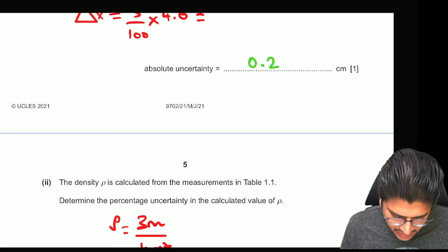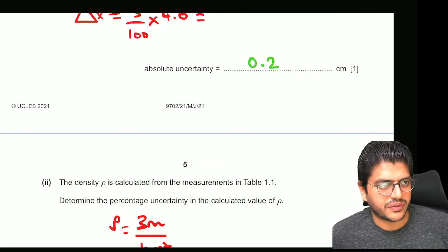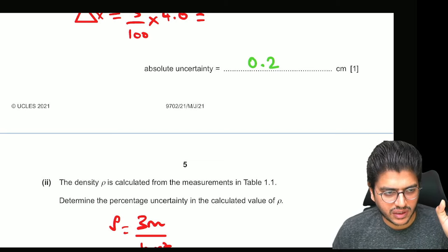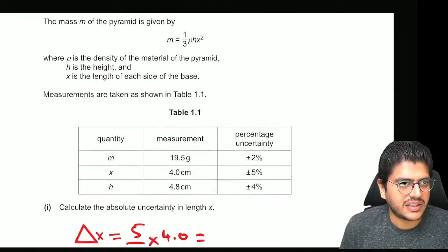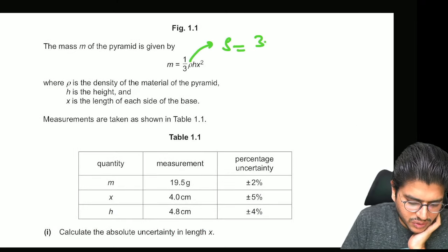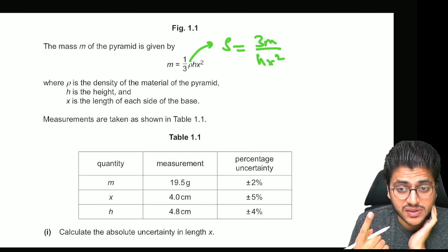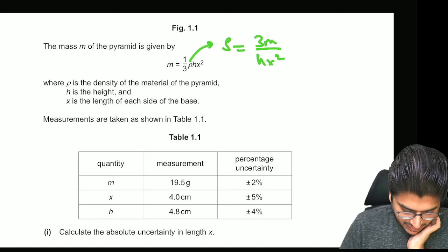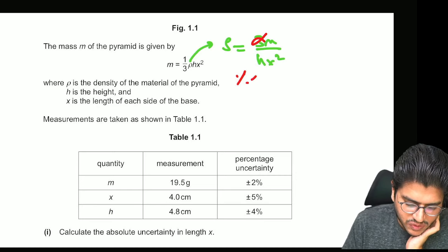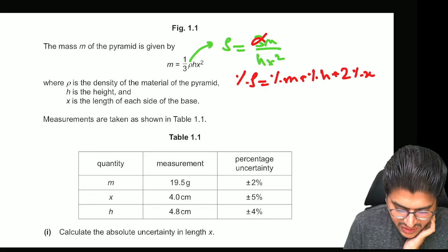Next. The density is calculated from measurements in table 1.1. Determine the percentage uncertainty in the calculated value of density. So again, because they are asking you for the percentage uncertainty in density, you have to make density the subject of this equation. So take density out. So density should be 3M over HX square. Now once you have this, what did I just tell you about constants? What do you do with them? You ignore them. Exactly. So you can cancel out 3 because that's not needed. So percentage ρ will be equal to percentage M plus percentage H plus 2 percentage X.